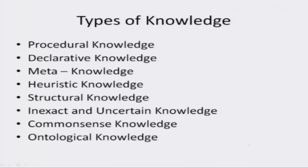The different types of human knowledge are: procedural, declarative, meta-knowledge, heuristic, structural, inexact and uncertain knowledge, common sense knowledge, and ontological knowledge. We will be discussing each one of them very briefly.